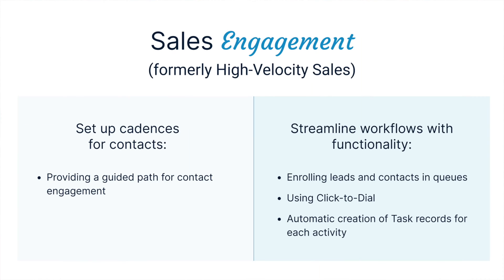Let's start with Sales Cloud and its productivity features. The Sales Cloud Unlimited edition offers a suite of sales products, including AI features designed to boost salesperson productivity. One such productivity feature is Sales Engagement, formerly known as High Velocity Sales. This feature allows administrators to set up cadences for contacts, providing a guided path for contact engagement.